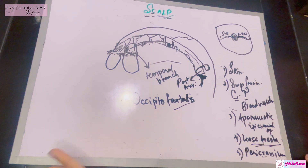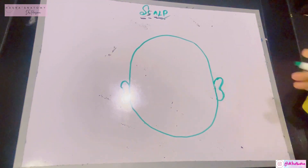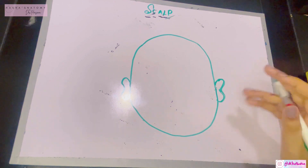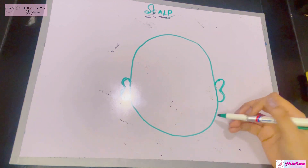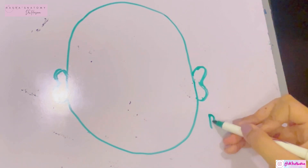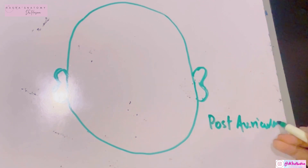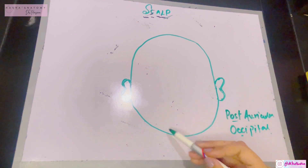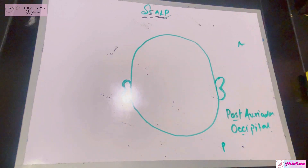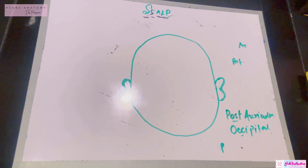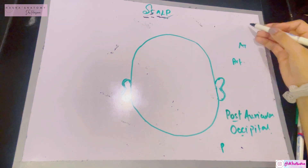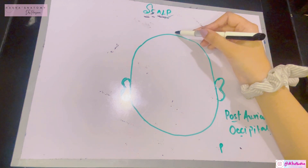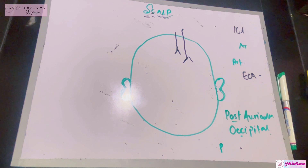Now let's talk about the nerve supply and vascular supply of the scalp. The auricles divide the scalp: anterior to the ear versus posterior to the ear. For the posterior part, remember two words: posterior auricular and occipital. For the arterial supply in front of the auricle, the supply is derived from both the internal and external carotid arteries.